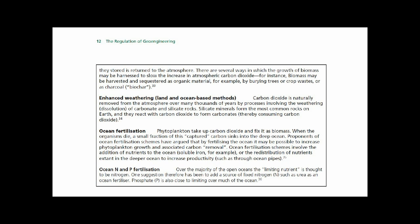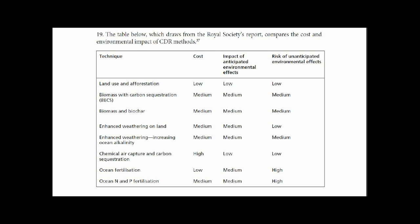Next: ocean nitrogen and phosphate fertilization. That's phosphate and nitrogen. Over the majority of the open oceans, the limiting nutrient is thought to be nitrogen. One suggestion therefore has been to add a source of fixed nitrogen — N2 — such as urea as an ocean fertilizer. Phosphate is also close to limiting over much of the ocean.